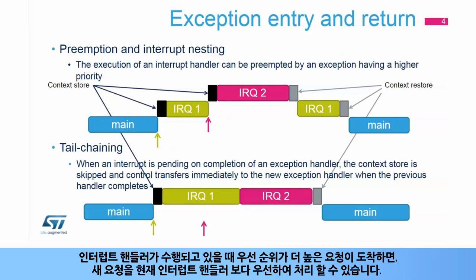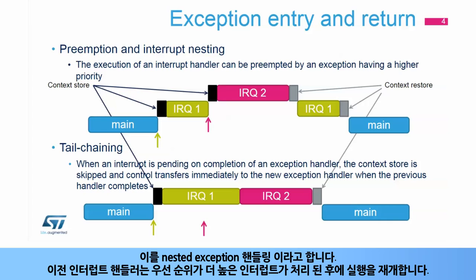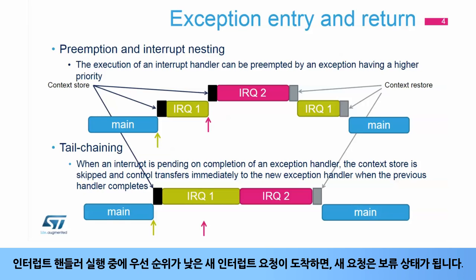When an interrupt handler is served and a new request with higher priority arrives, the new exception can preempt the current one. This is called nested exception handling. The previous exception handler resumes execution after the higher priority exception is handled.